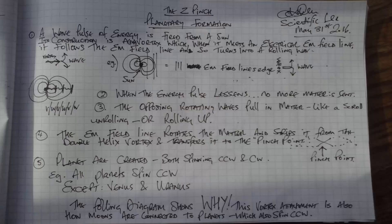Okay, today I'm going to talk about the z-pinch planetary formation. This is where a planet forms in a Birkeland current which is part of an EM field. A wave pulse of energy is fired from a sun.